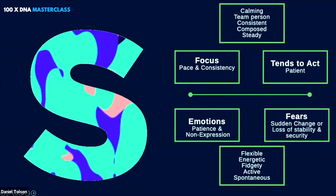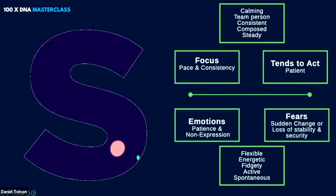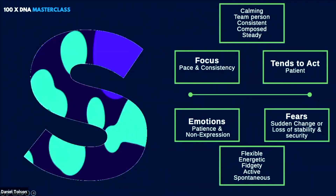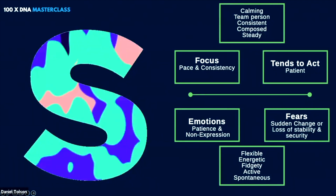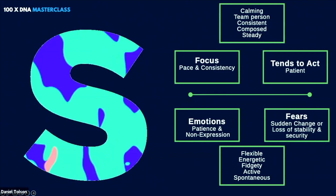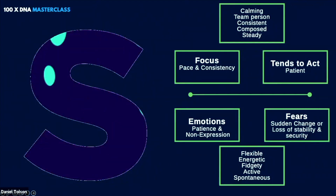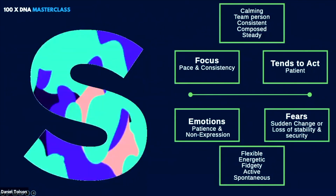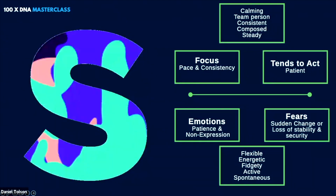So are you a high S or are you a low S style? Go to the chat box — which of those words would describe you? Calming, team person, consistent, composed, steady? Or are you a low S — flexible, energetic, fidgety, active, spontaneous? What words describe you?